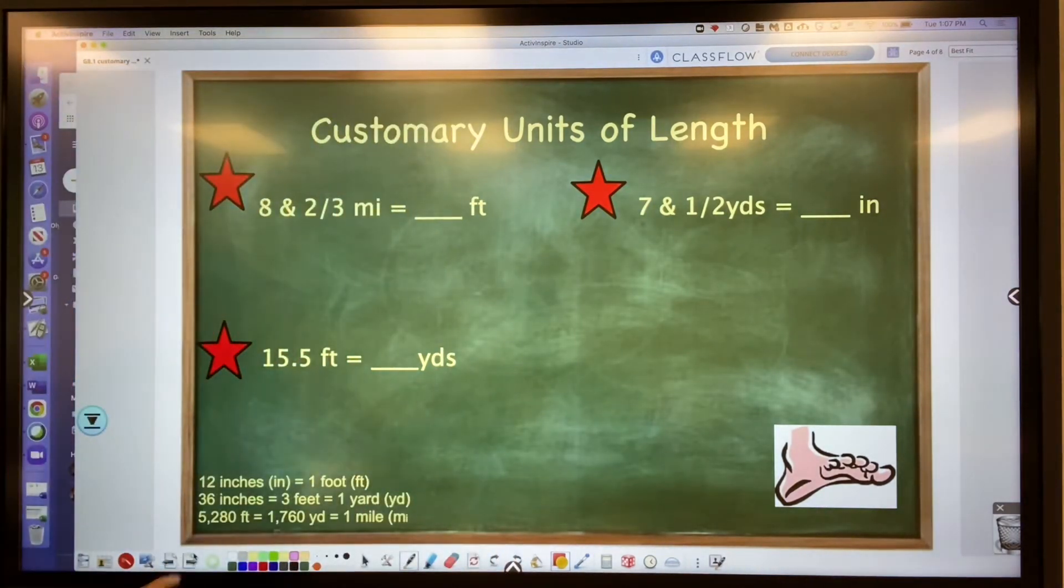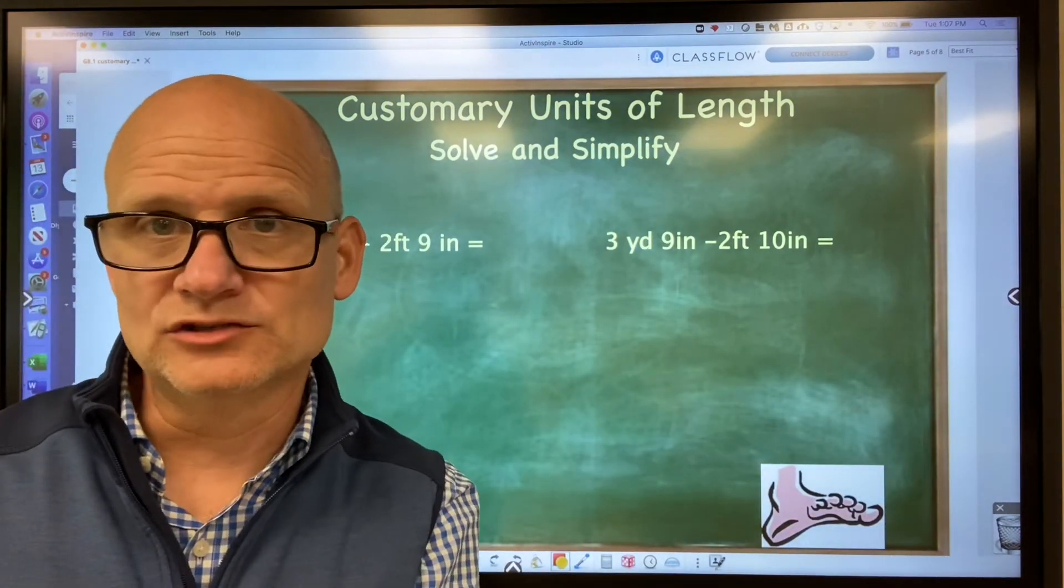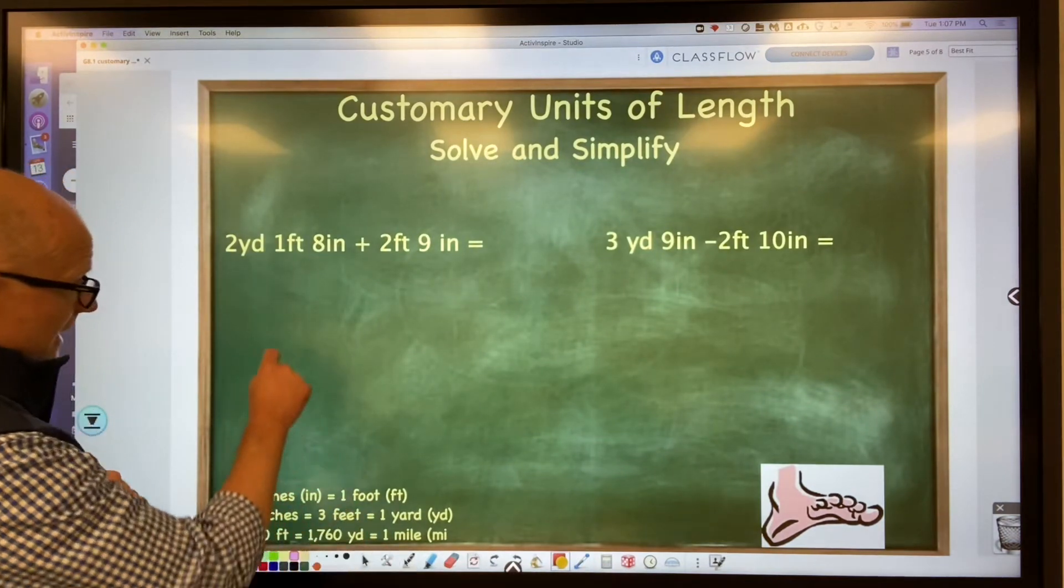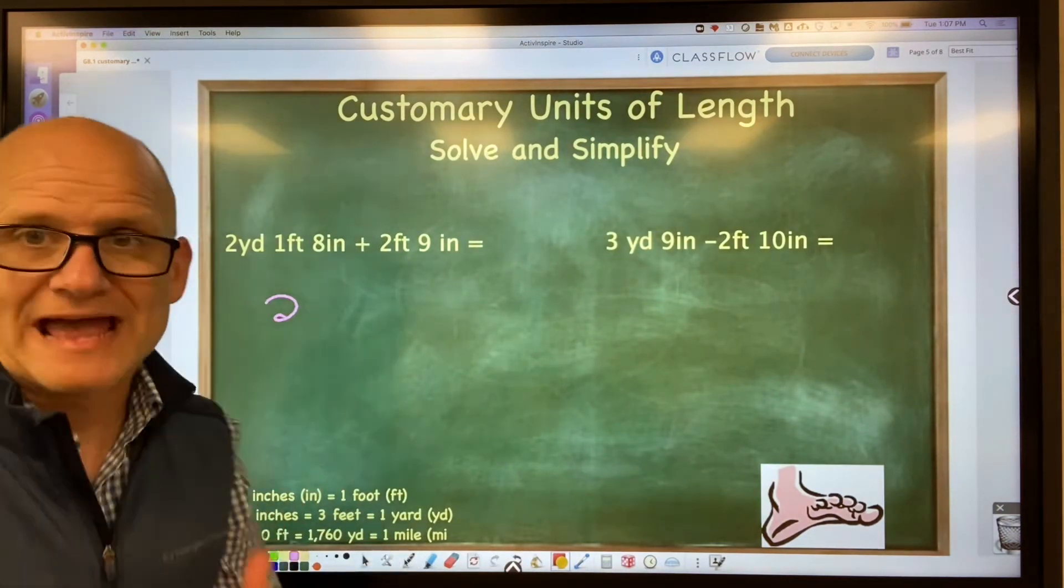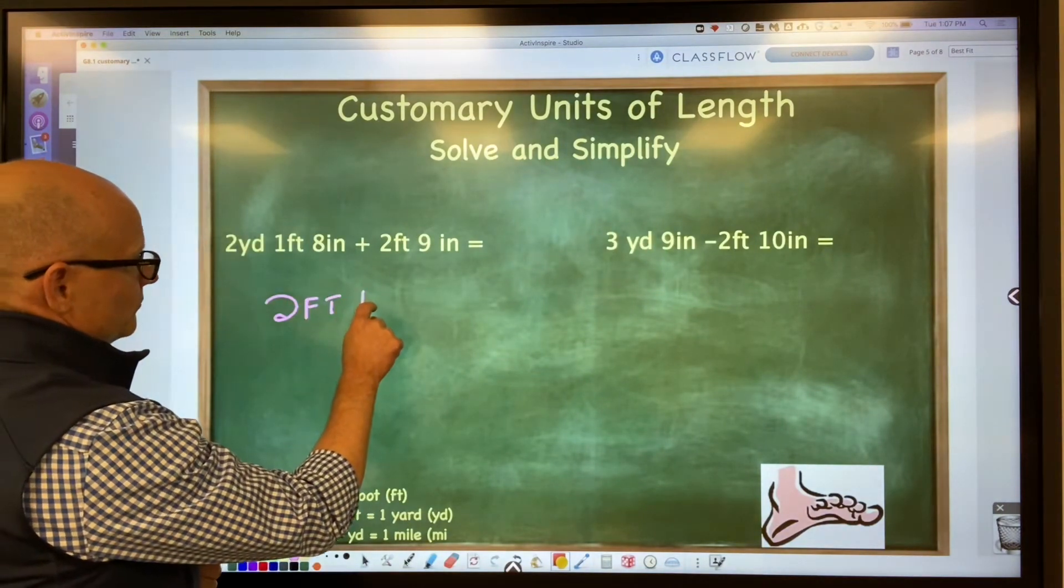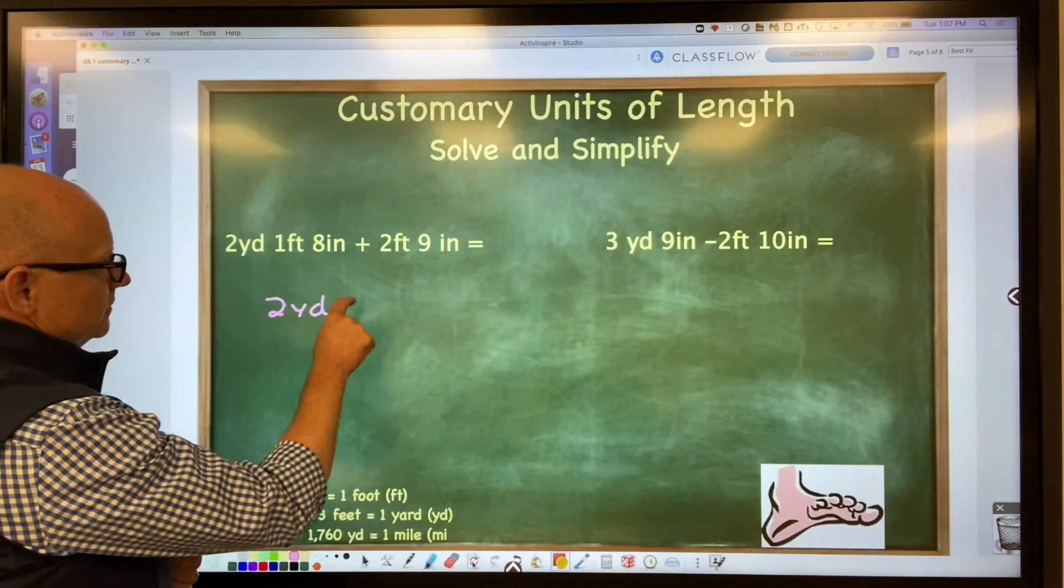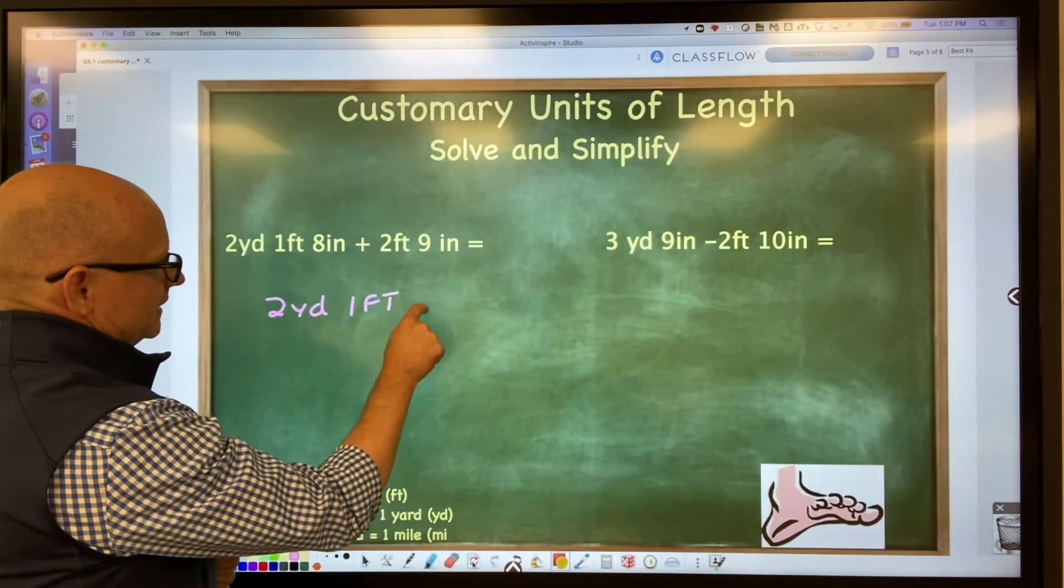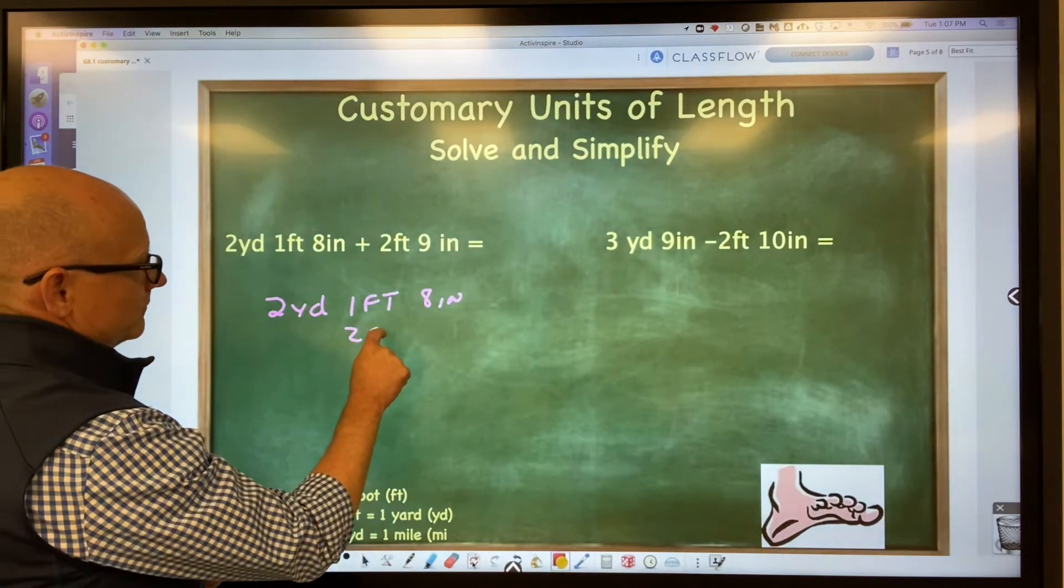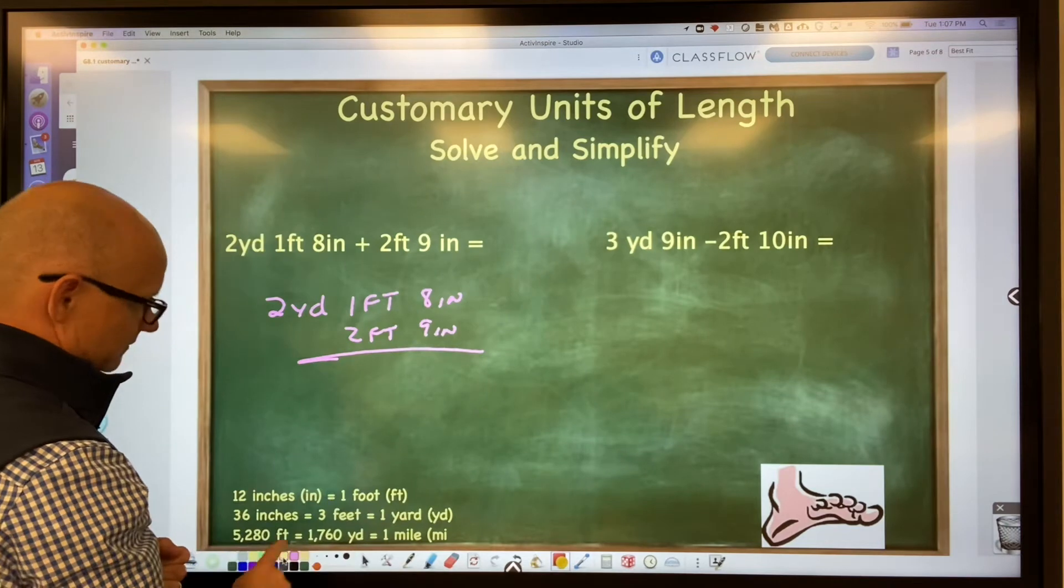The other thing I want to talk about is adding and subtracting units. I want you to look at this problem. I often ask students to add these units, and I'll see them write it down. You should have two yards, one foot, eight inches, and then two feet, nine inches. Here's what I see them doing. This is a mistake.